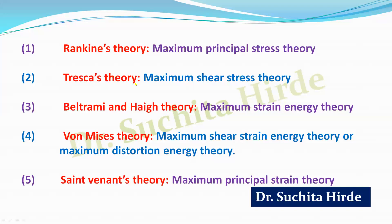The five theories are: Rankine's theory, Tresca's theory, Beltrami and Haigh theory, Von Mises theory, and St. Venant's theory. In Rankine's theory, the material will fail when the maximum principal stress reaches its limiting value. In Tresca's theory, failure occurs when maximum shear stress reaches its limiting value. Beltrami and Haigh theory depends on maximum strain energy. Von Mises theory is based on maximum shear strain energy, also called maximum distortion energy theory. St. Venant's theory is based on maximum principal strain.